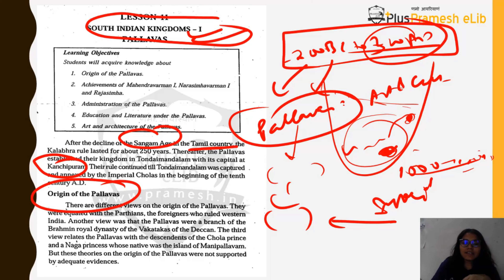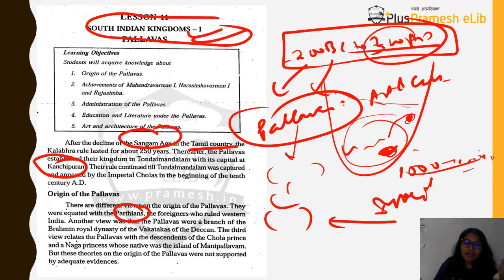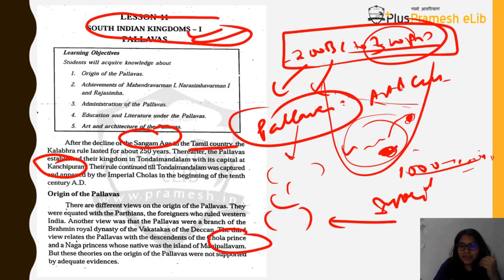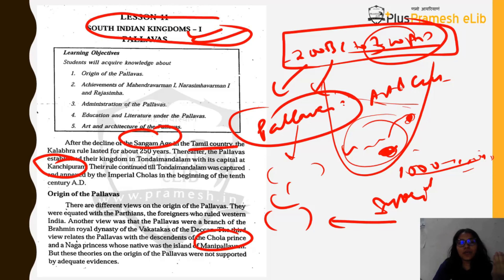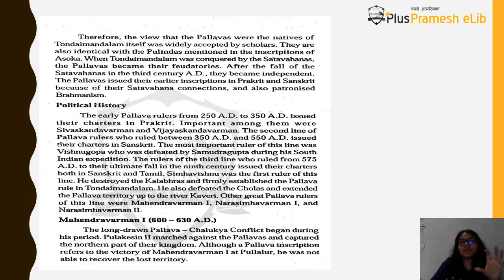Regarding the origin of Pallavas, there are different views. Some say they were like Parthians — foreigners who came to Western India. Another view is that Pallava was a Brahmin royal branch of the Vakatakas of the Deccan. A third view says Pallavas were descendants of a Chola prince and a Naga princess from the island of Manipallavam. However, there is no adequate evidence for any single theory, so it is generally considered that Pallavas may have been natives of the Todai Mandalam area itself.